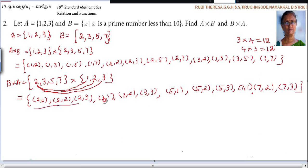Check the answer. 1 times 3 is 3, 2 times 3 is 3, 3 times 3 is 3, 4 times 3 is 12. So A cross B, B cross A you found out the answer.